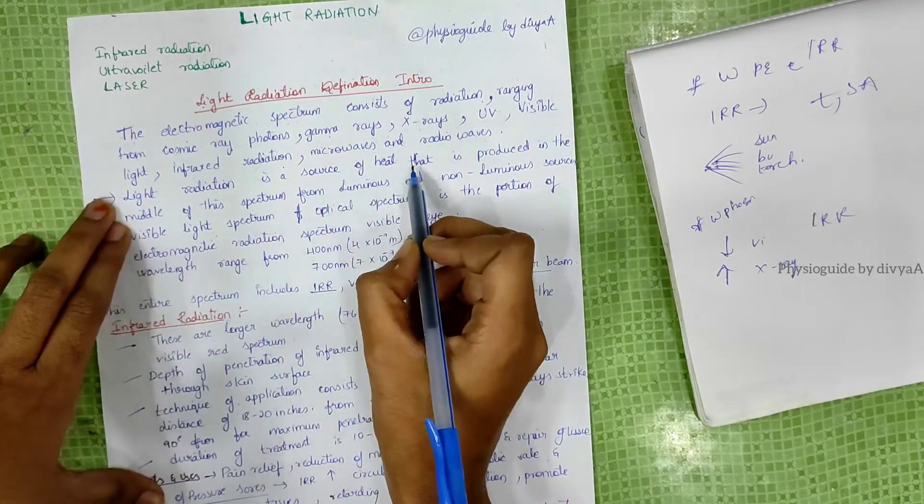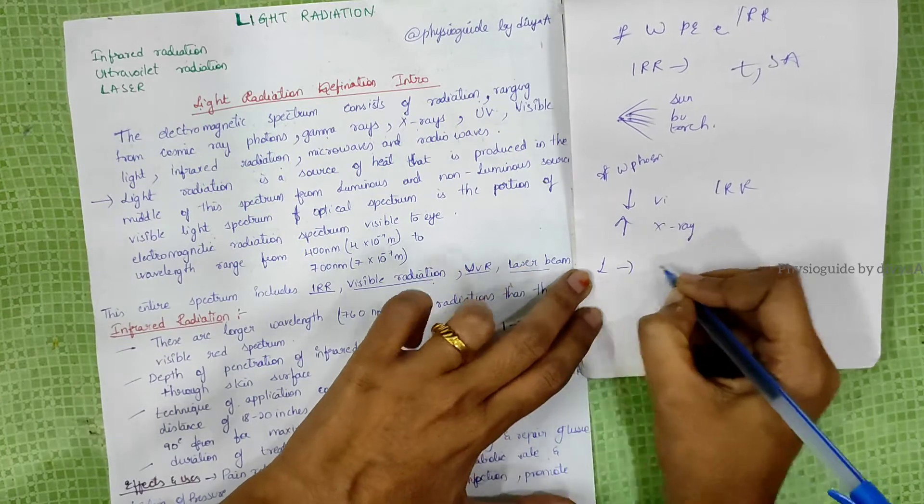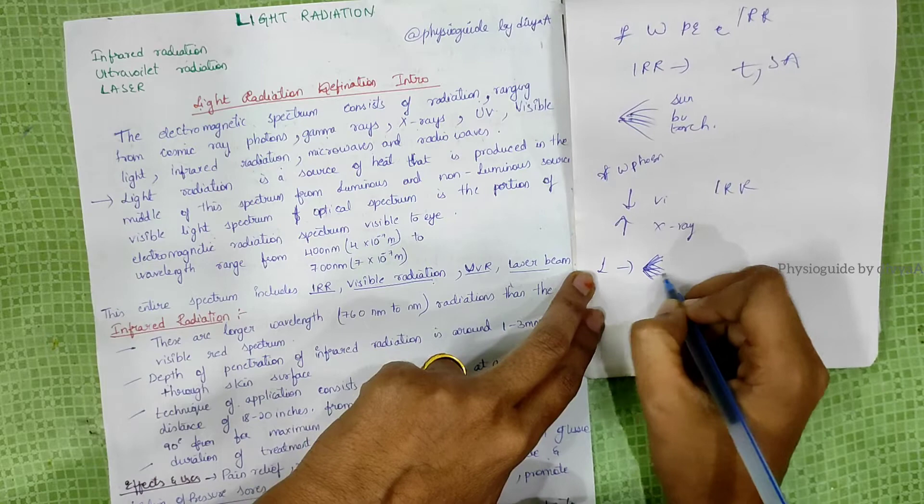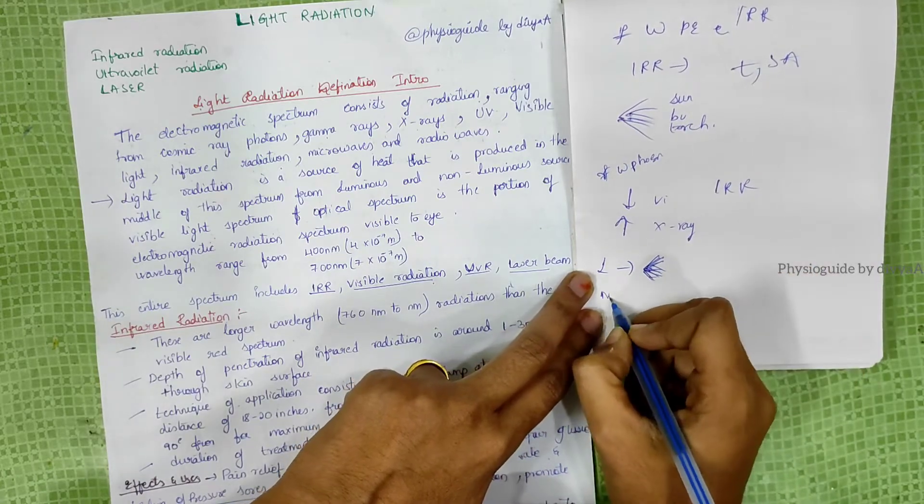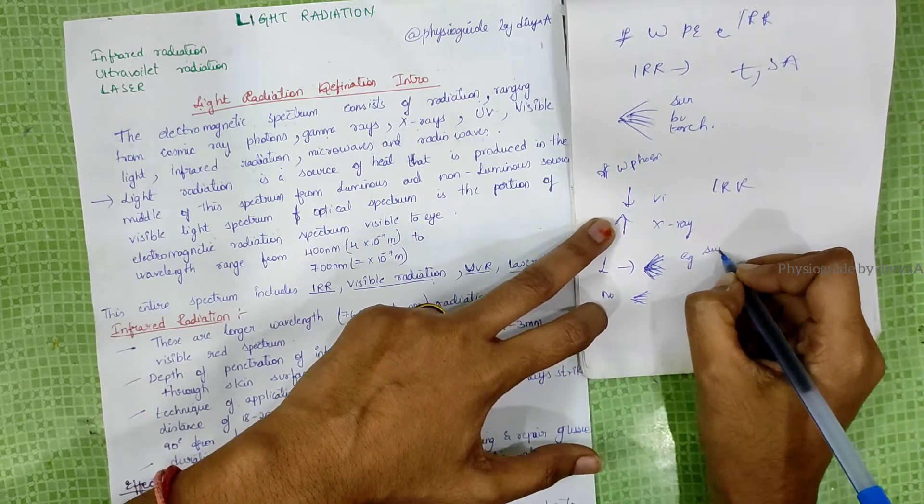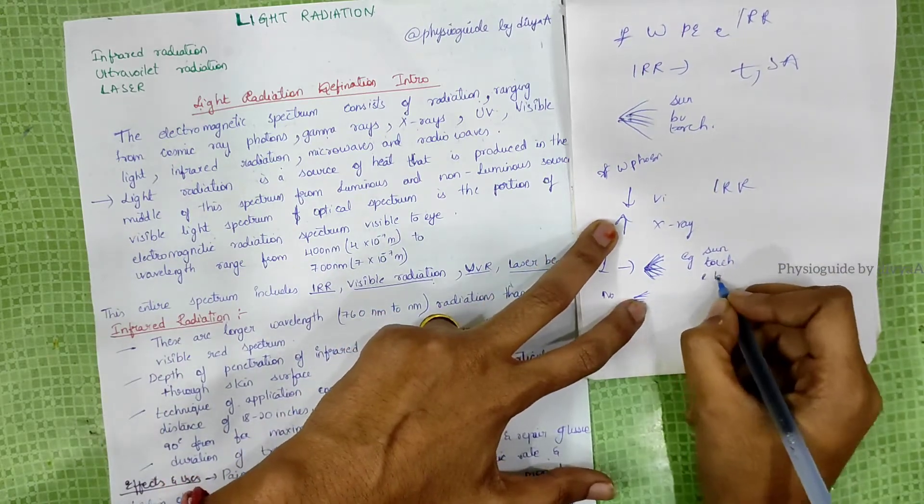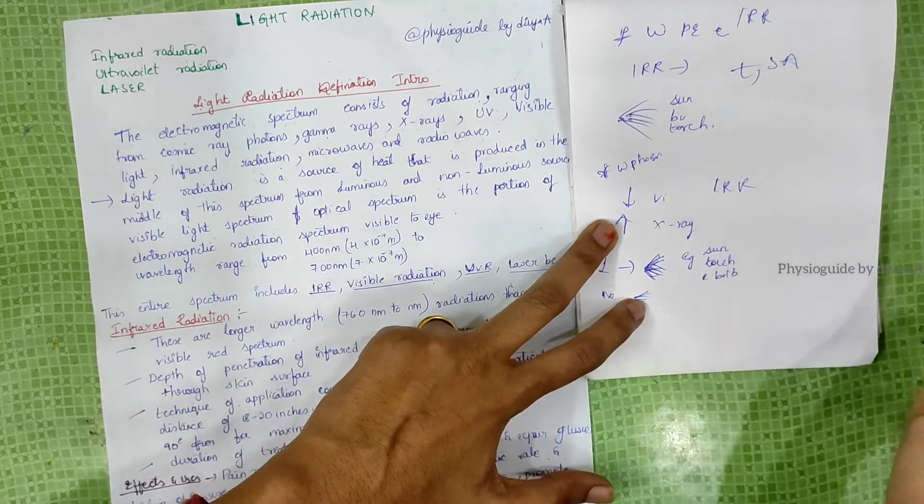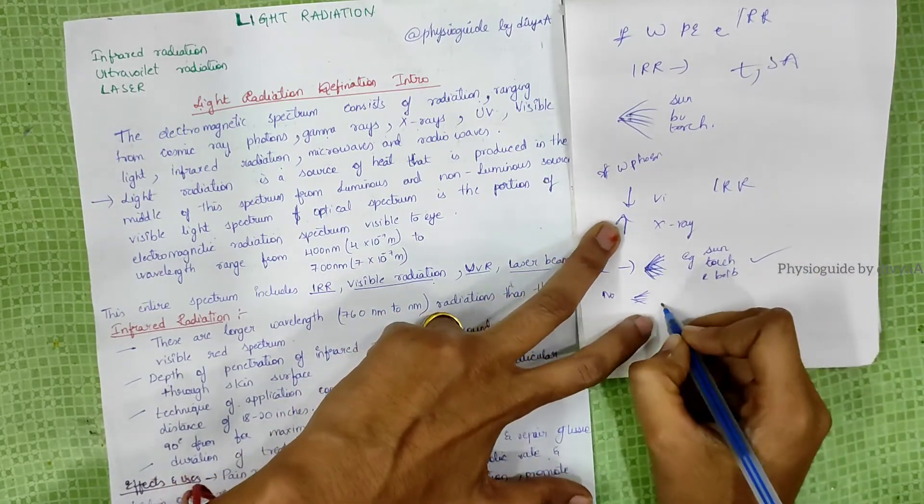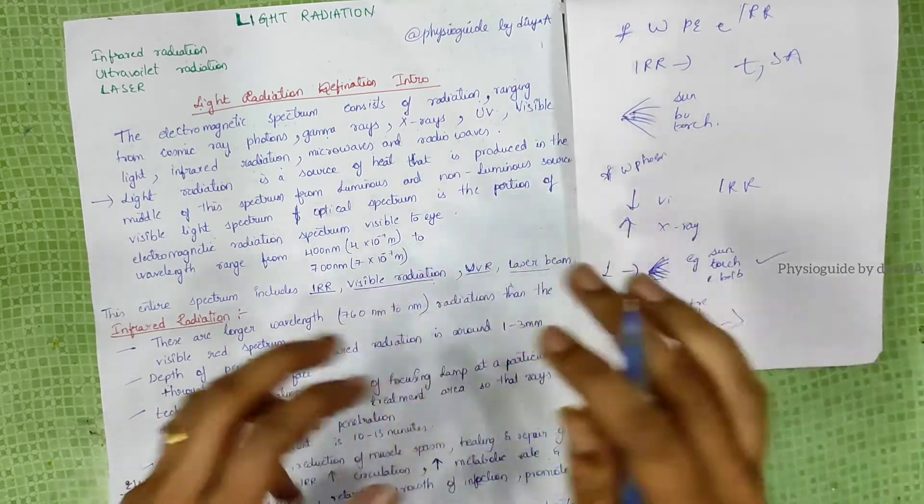Light radiation is a source of heat produced in the middle of the spectrum. Luminous means light is produced - these particles are called luminous. Non-luminous means they do not emit light. Examples of luminous sources are the sun, torch, and electric bulb. Examples of non-luminous are trees, shoes, animals, and galaxies.